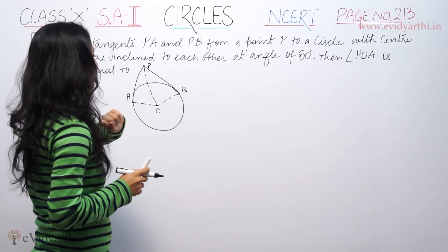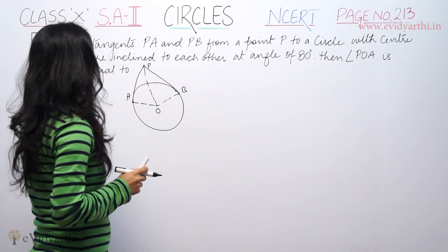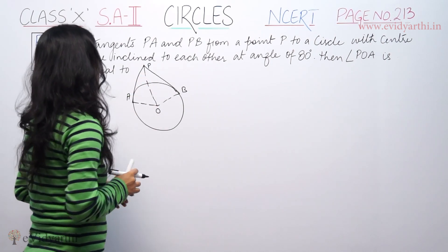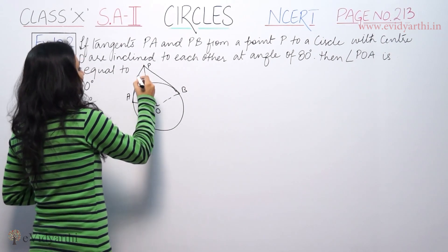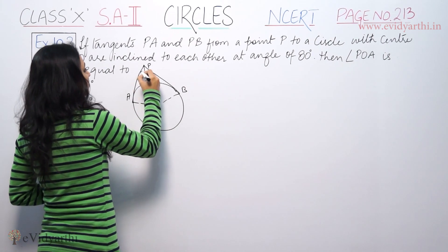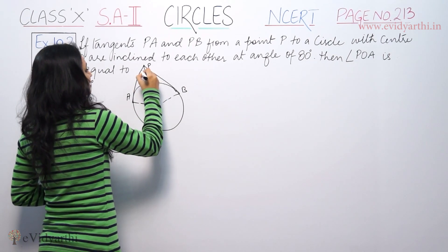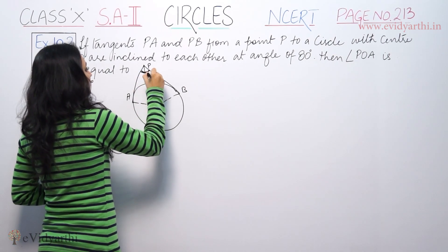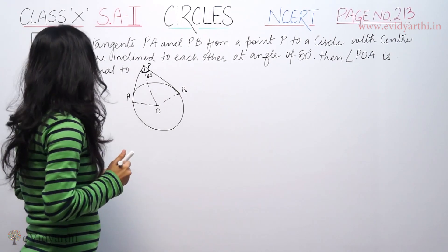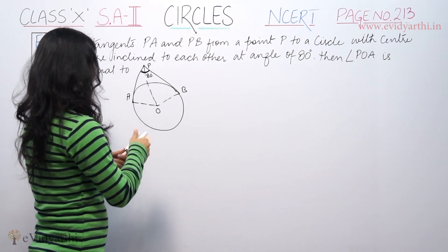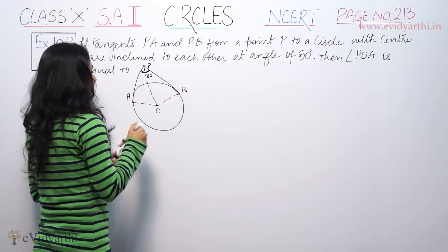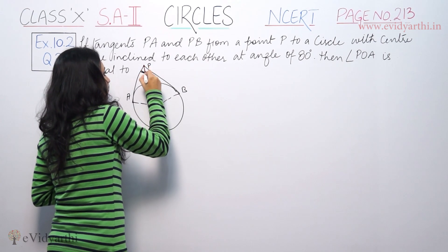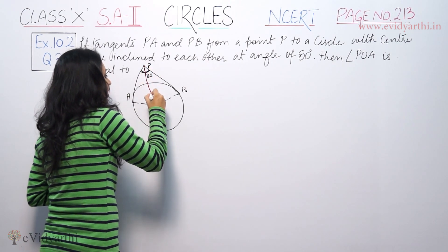The angle between PA and PB is 80 degrees. We have to find angle POA — this is the angle we need to find.